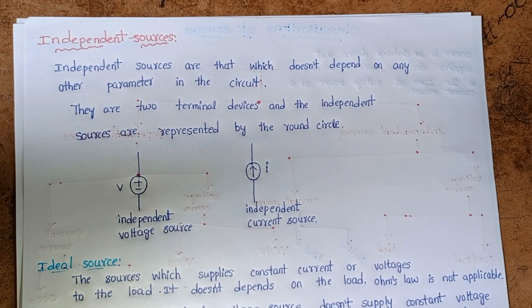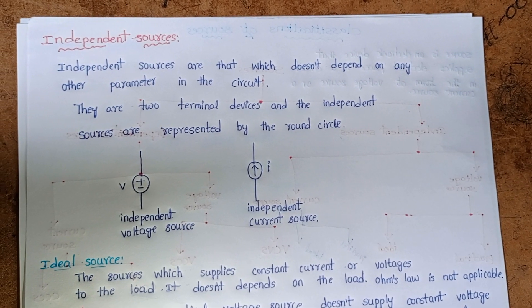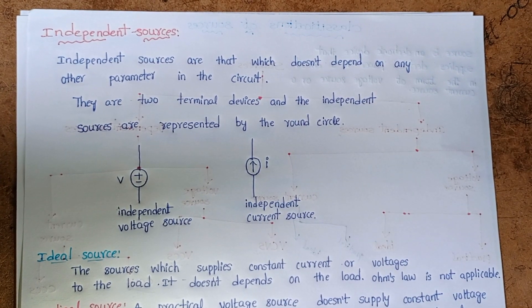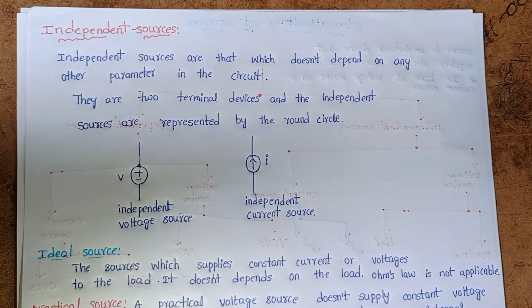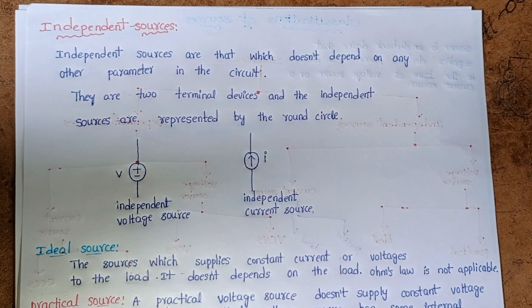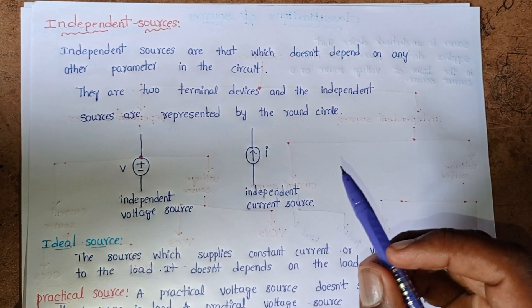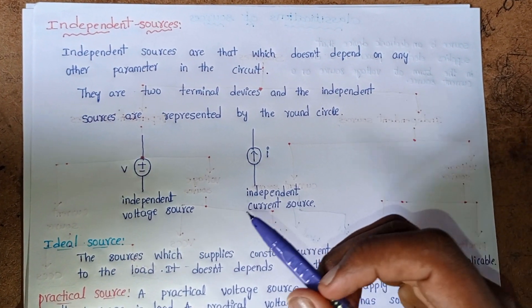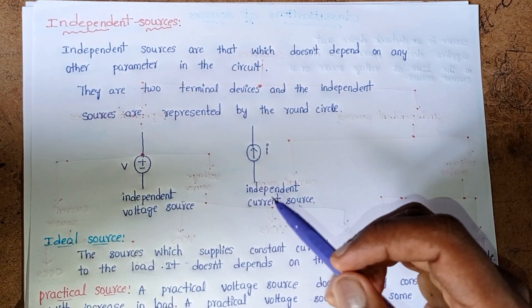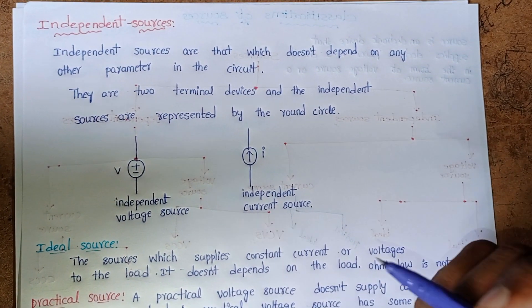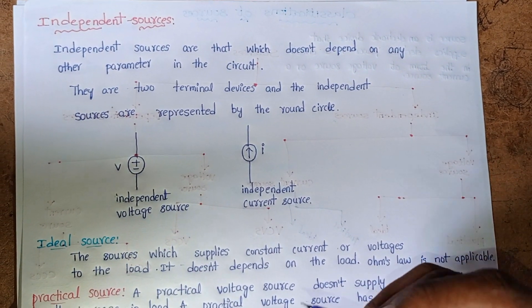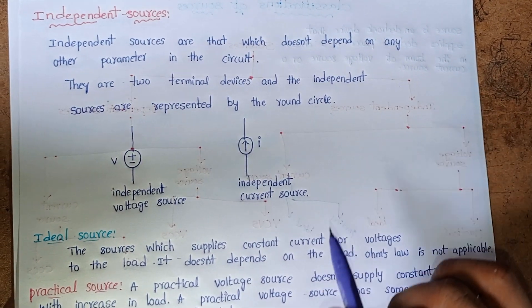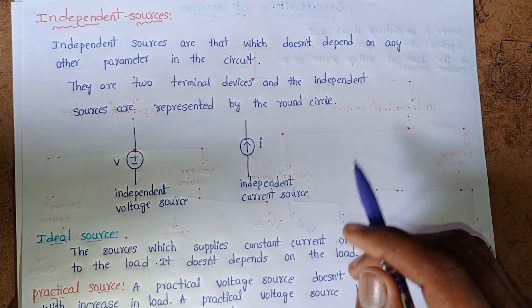Hello friends. In the last video we discussed about the different types of sources — independent sources and dependent sources. In this video we are going to discuss clearly about what are independent sources, what are the different types of independent sources, what are dependent sources, and what are the different types of dependent sources.